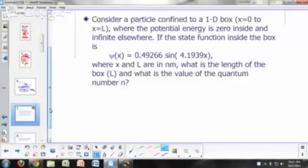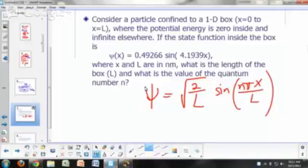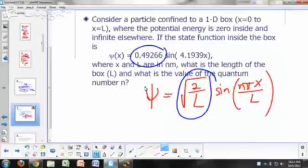All you have to do is match this with our equation. What's our equation? Psi equals square root of 2 over L, sine n pi x over L. So what do we have? This thing right here, square root of 2 over L, must be equal to what? 0.49266. So that allows you to solve for L.